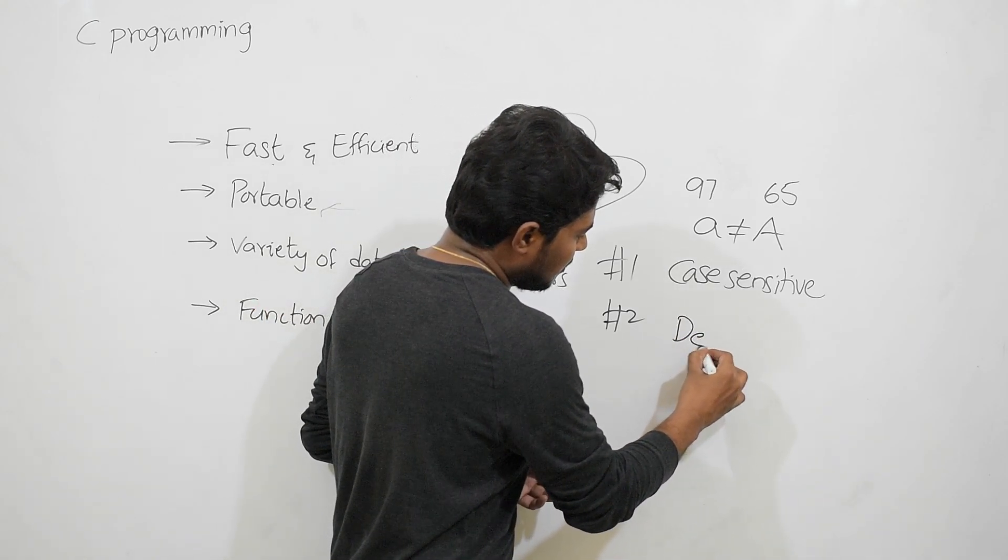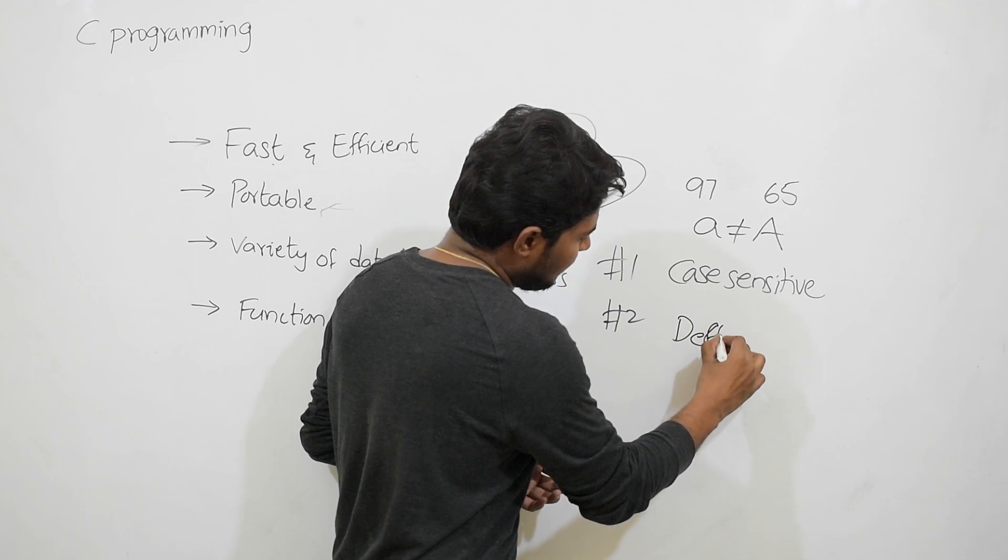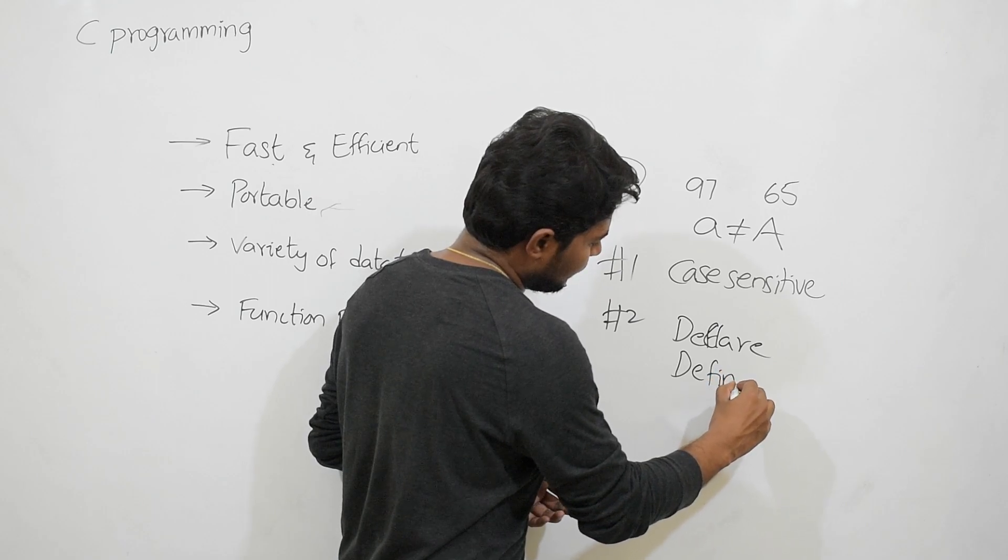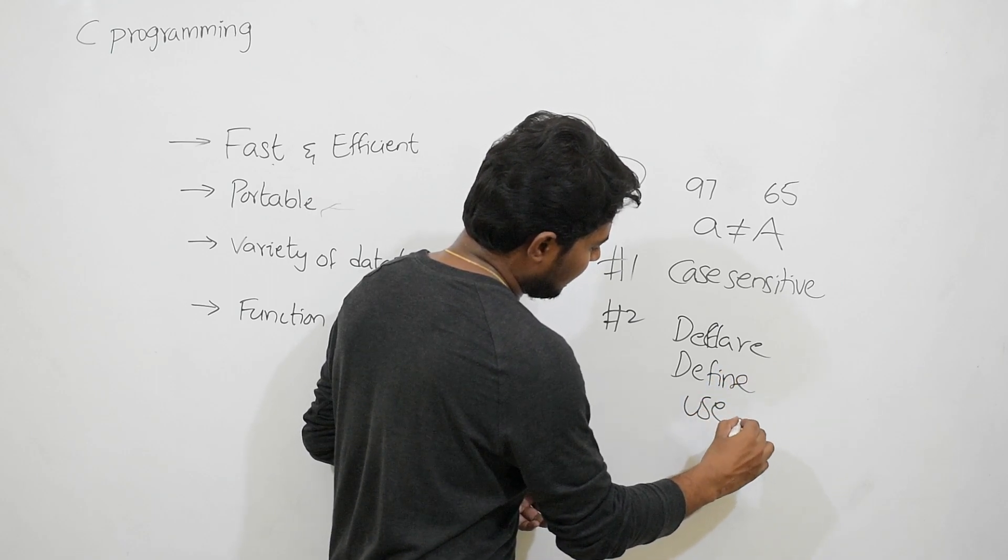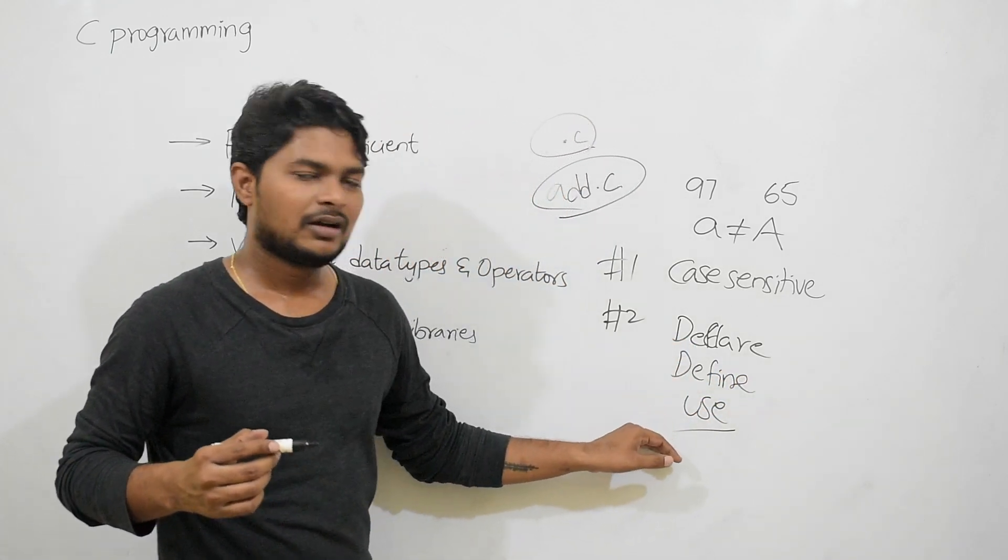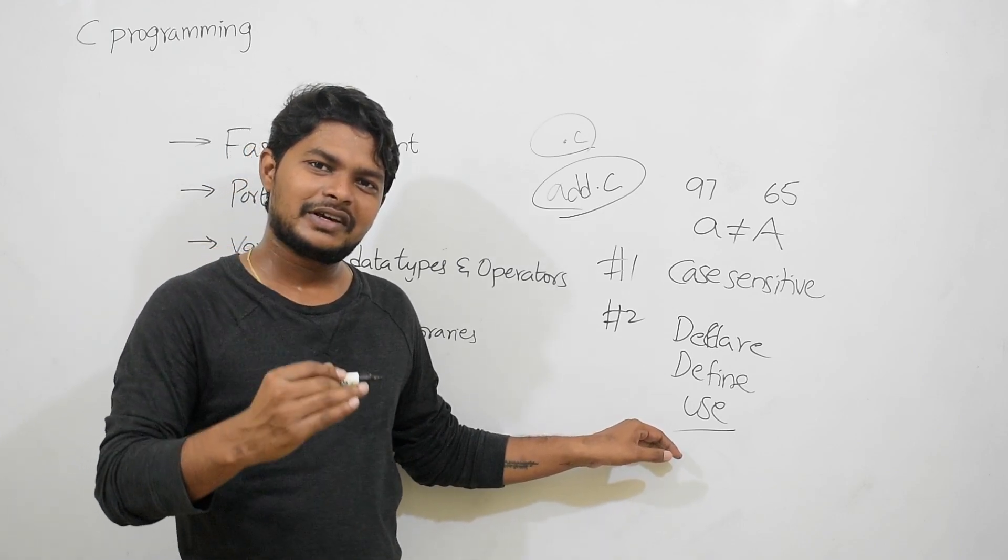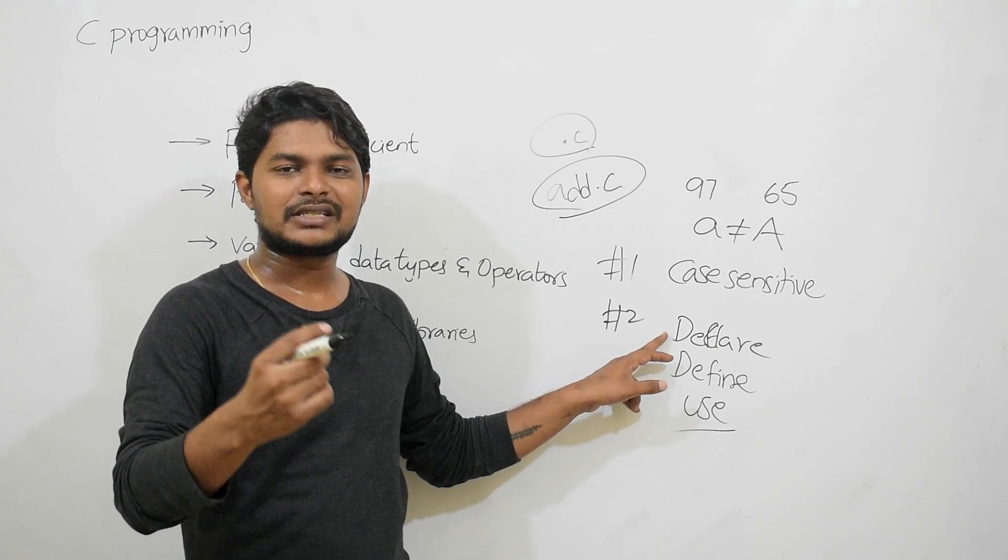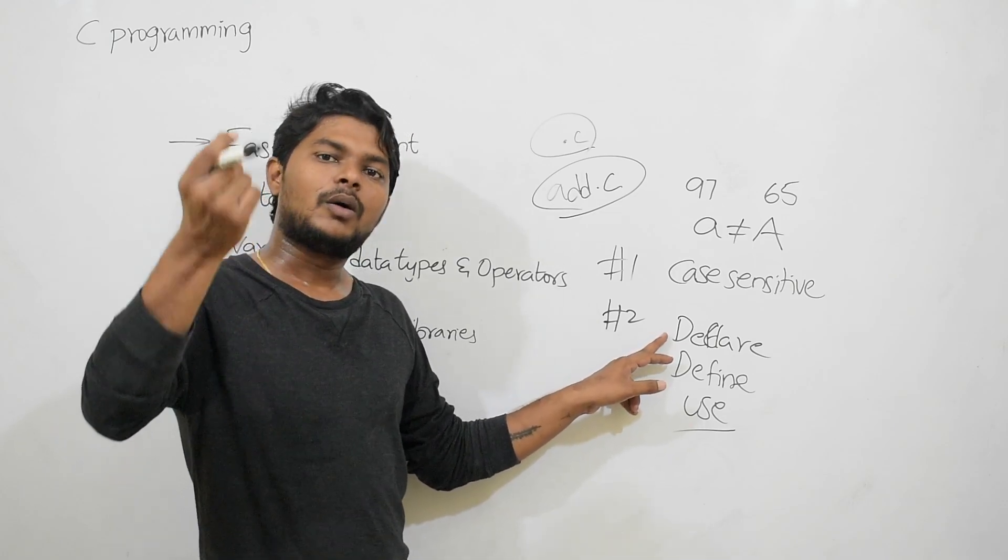Then we need to define them, then we need to use them. These three are very, very important steps. First you need to declare them, means what are the variable, what data type it is. You need to define them, define the value for that variable.